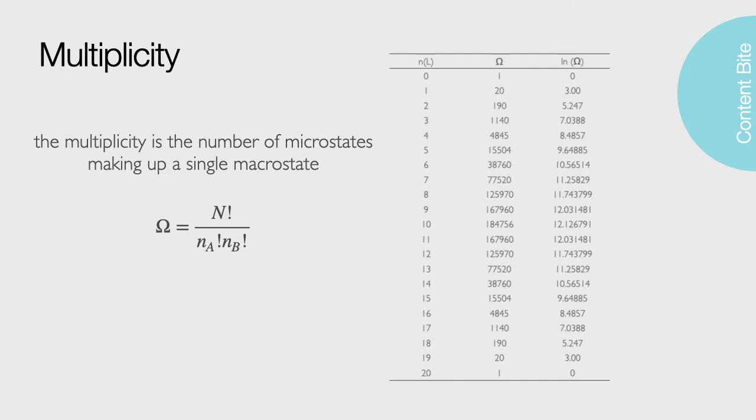Well, I can calculate the multiplicity of microstates for any given macrostate by using the following equation. Omega is equal to capital N factorial over NA factorial multiplied by NB factorial. Here, omega is the multiplicity, or number of unique microstates. Capital N is the total number of particles, with NA being the number of particles in state A and NB the number of particles in state B.